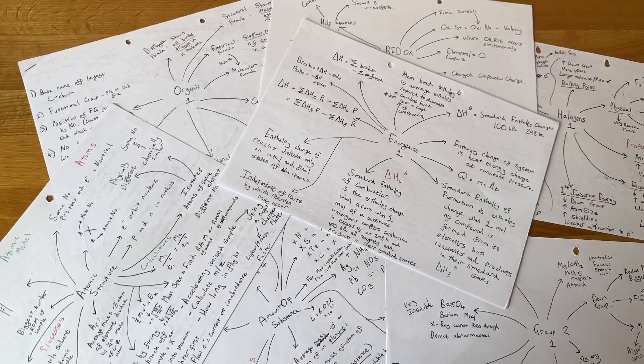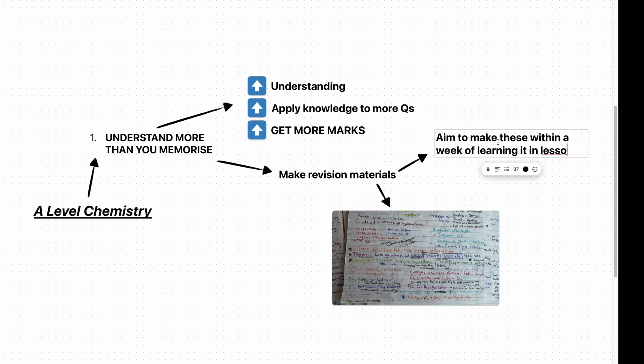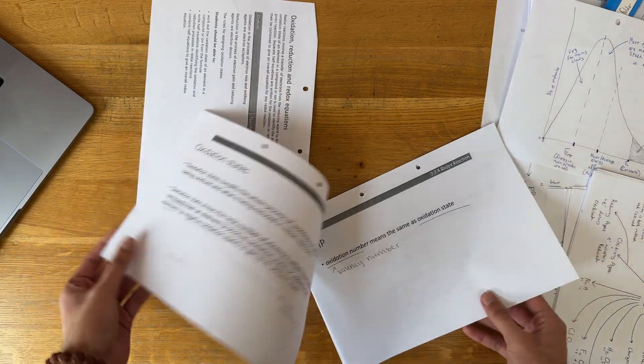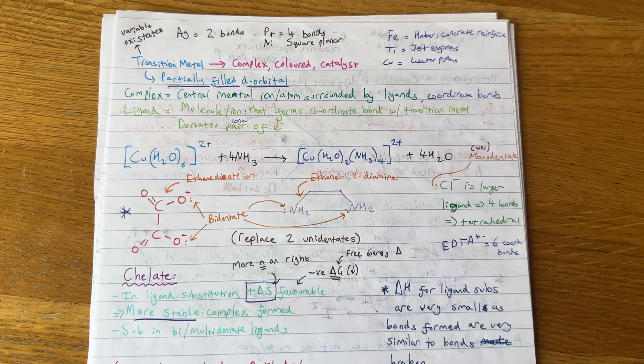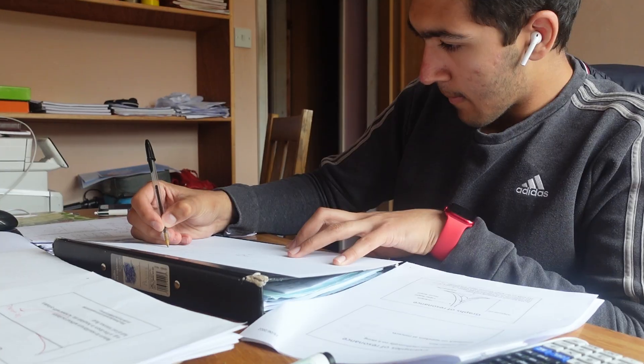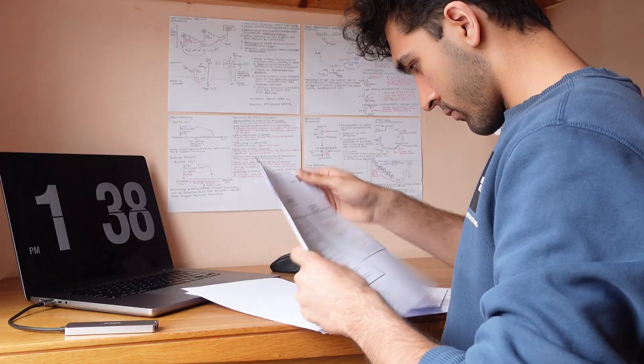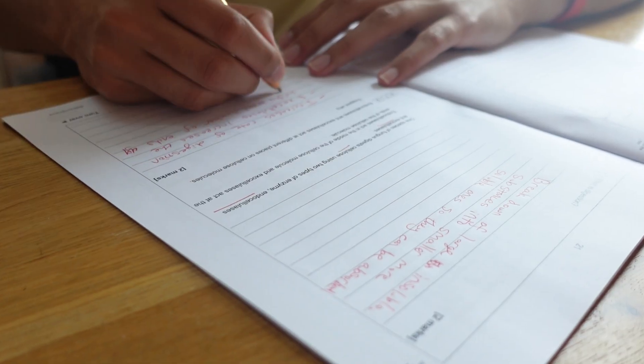When you make your revision material, it's important to get the timing down. I made notes within a week of learning them in lessons, so whatever was covered within the week, I would make notes of during the weekend. This helped me stay on top of the content, and having a recap of what you learned within a week helps with spaced repetition. Making your revision material throughout the two years means you're under much less stress later in the year, like before mocks and exams.